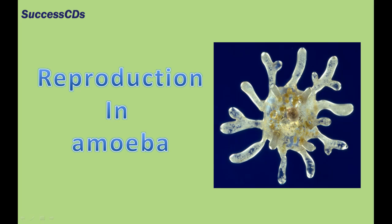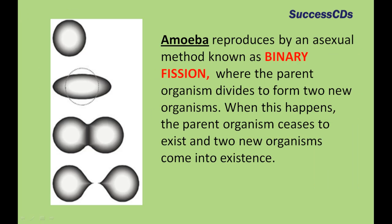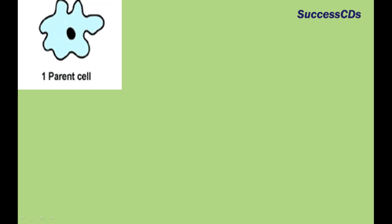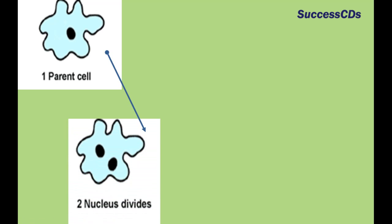Let's now learn about reproduction in amoeba. Amoeba reproduces by an asexual method known as binary fission, where the parent organism divides to form two new organisms. When this happens, the parent organism ceases to exist and the two new organisms come into existence. When the amoeba cell has reached its maximum size of growth, the nucleus of amoeba lengthens and divides into two parts.